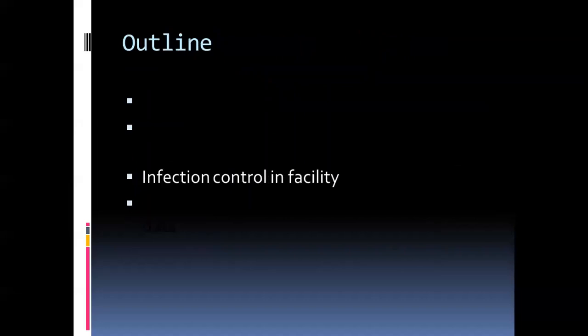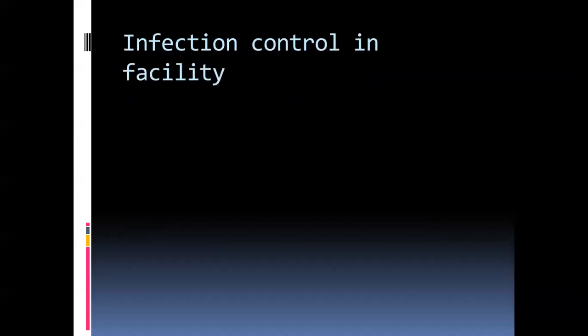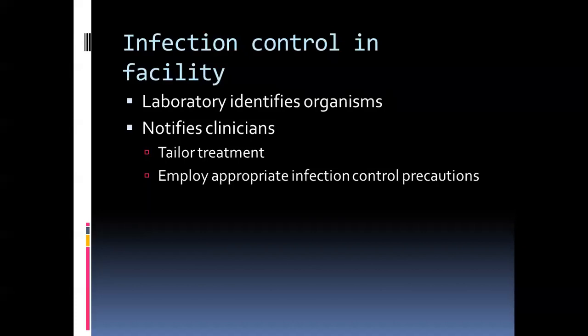All of these multi-drug resistant organisms require appropriate infection control in the facility. Most laboratories, once they identify these organisms and perform susceptibilities, notify clinicians to tailor treatment and employ appropriate infection control precautions. However, if they do not notify you, or if the laboratory is a commercial lab without that protocol, you can call them yourself or review the report to identify whether the organism needs action based on the guidelines discussed. The most common infection control precautions used are contact precautions, which require a single room, gloves, gowns, and masks.